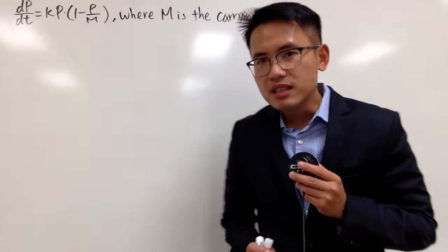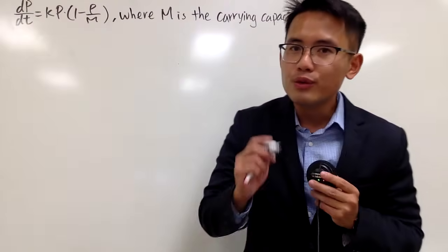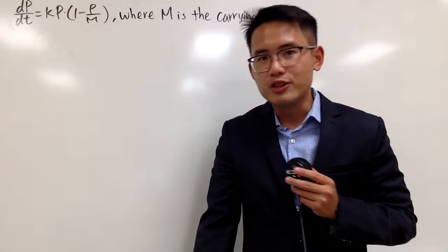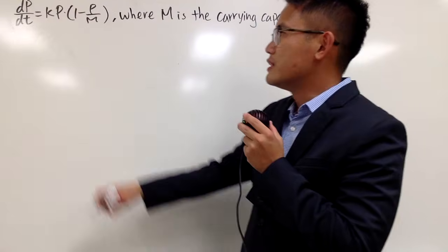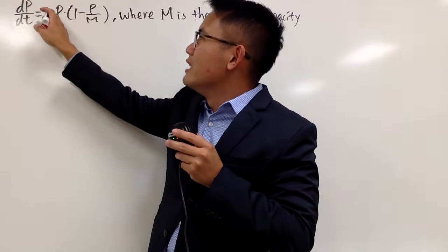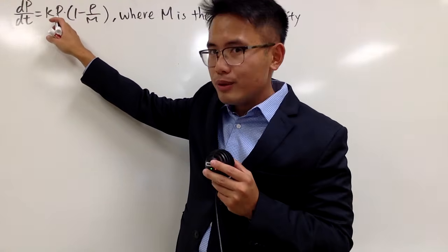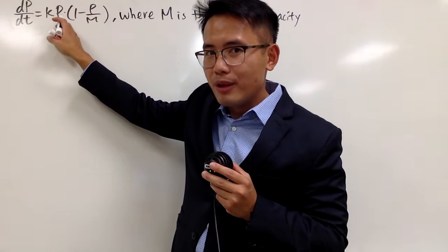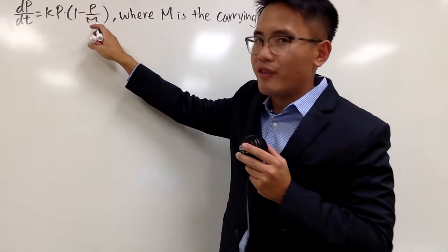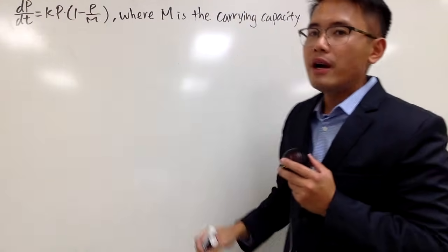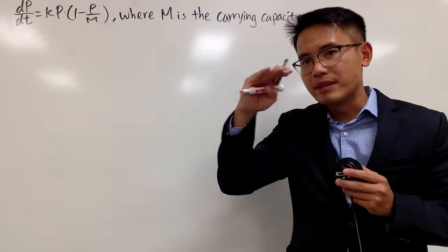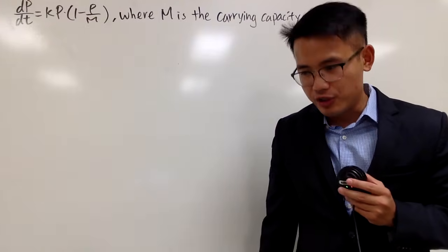In this video, I'll show you guys another differential equation to model populations. This is called the Logistic Differential Equation, which says the rate of change of the population with respect to time is proportional not only to the population itself, but also to this factor, namely 1 minus P over M, where M is what we call the carrying capacity — pretty much the maximum number that the population can reach.